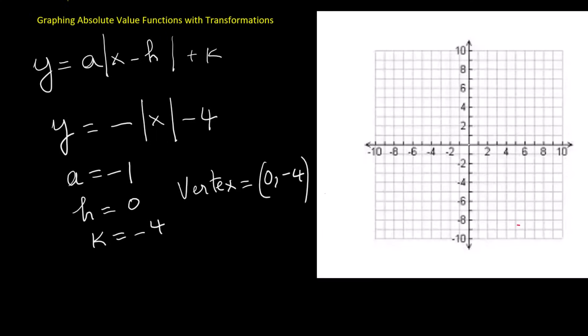Since the slope is negative 1, from the vertex move down one unit and to the left one unit to plot a point. Reflect that same move to the right side by going down one unit and to the right one unit to plot another point. Connecting these points creates a V-shaped graph that opens downward, reflected over the x-axis.